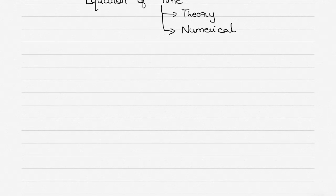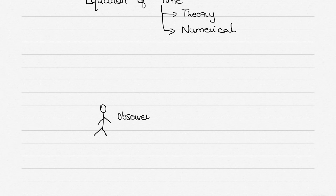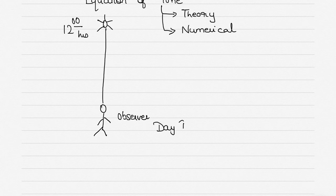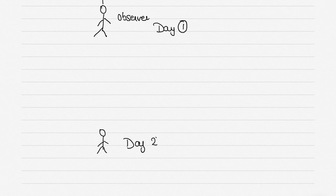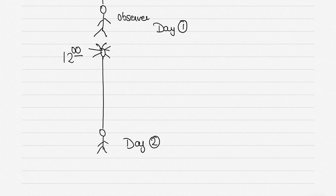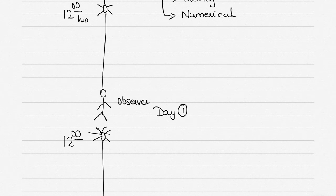To explain the theory of equation of time, let me put you as an observer in the celestial sphere, because equation of time is a concept based on the celestial navigation system, not on the terrestrial navigation system. Here you are as the observer, and you observe that on your celestial meridian the sun comes exactly on your meridian at 1200 hours — this is day one.